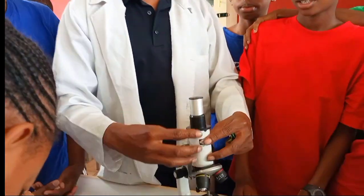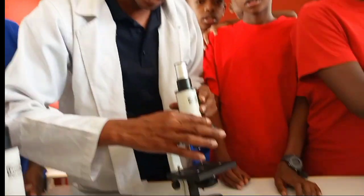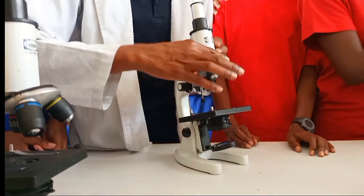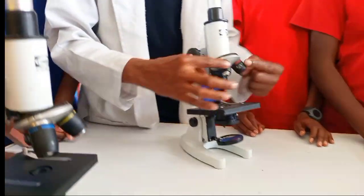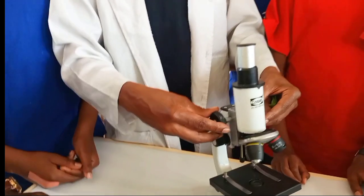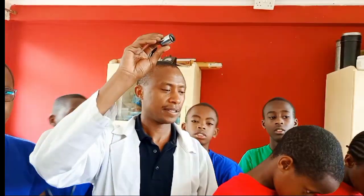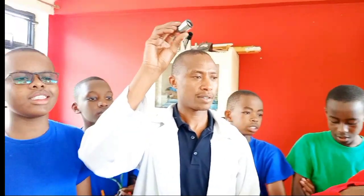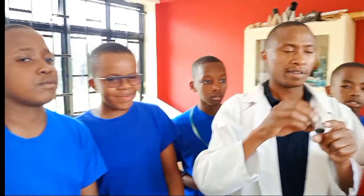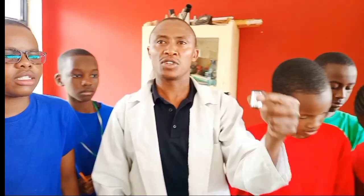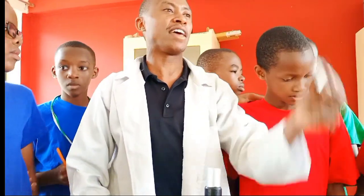What do you call this other part? Body tube. What do you call this rotating thing? The revolving nosepiece. Which part has the objective lenses? Then we have the coarse adjustment knobs. So this one is the one with the lenses that help to magnify the image?